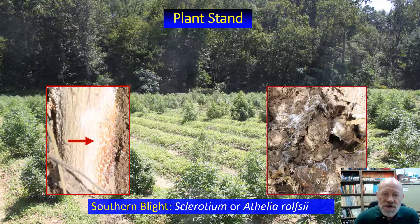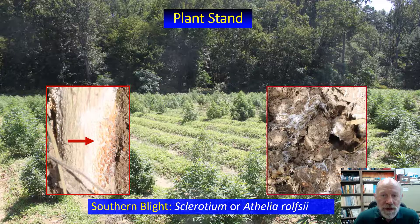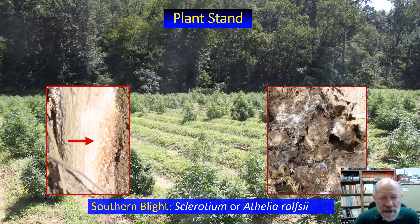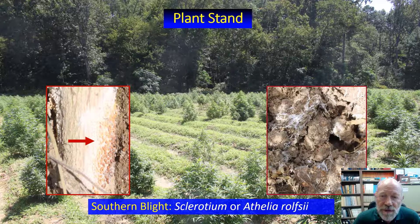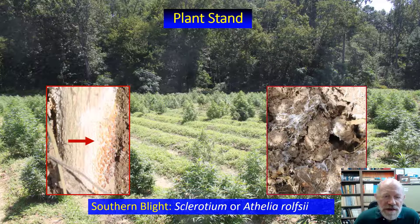Just because you see white fungal growth on an infected plant stem doesn't necessarily mean that Southern blight is to blame. You need to see small, round, reddish-brown structures called sclerotia on the infected plant stem. The smaller picture on the left with the red arrow pointing at the sclerotia shows an example of what you need to look for. These sclerotia can also be on the soil around that stem, and you need to see these sclerotia to be sure that the disease killing that plant is actually Southern blight.